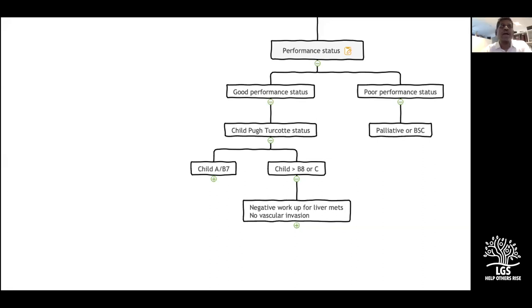Moving to patients with good performance status, the next step is evaluation of liver status. We divide into two categories: Child A and B7, and Child B8 and C. Those are the bad livers with poor liver function. On both sides, the workup is for liver metastasis.